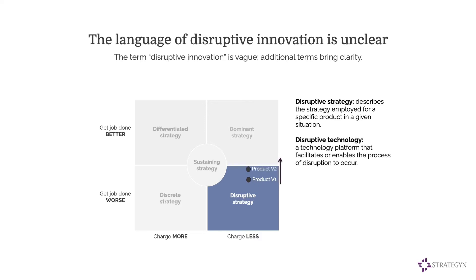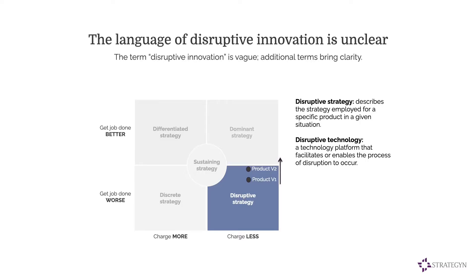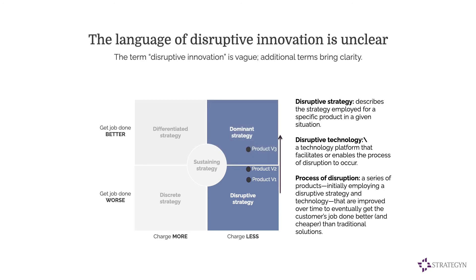Then there's the concept of a disruptive technology. Not all products include disruptive technologies — in other words, a technology platform that facilitates or enables the process of disruption to occur. A product may not be amenable to improvement; it may be constrained to operate at low function, and if that's the case, the process of disruption cannot occur. The third aspect is the actual process of disruption, which describes a series of products initially employing a disruptive strategy and technology, which has improved over time to eventually get the job done better and cheaper than traditional solutions.